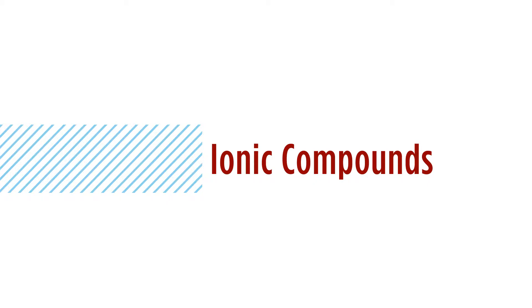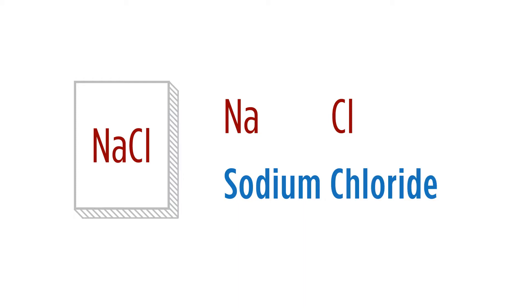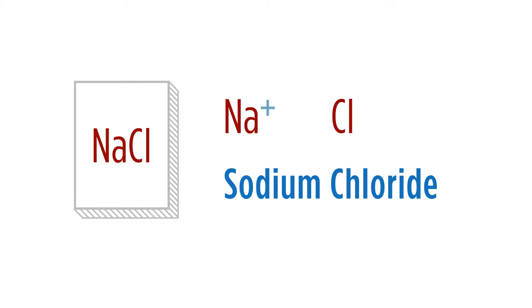For ionic compounds, we can start with something relatively simple: NaCl. Na, as we know from the periodic table, is sodium. And Cl is chlorine — in this case, it's chloride. The positive ion sodium is in group 1A, so it has a positive one charge. Chlorine likes to have a negative charge, so we change the suffix to -ide to indicate it's negative. So: sodium chloride.